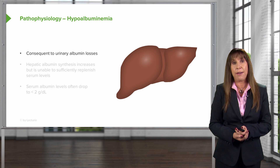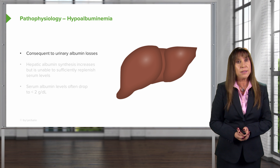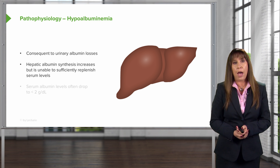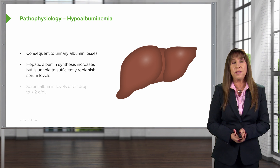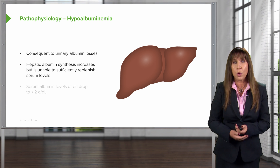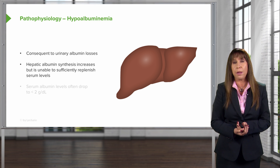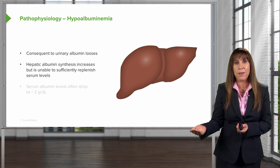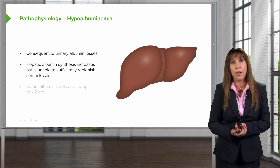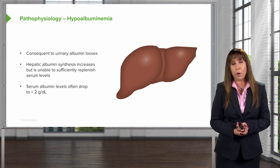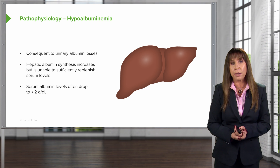Our patients have hypoalbuminemia simply due to the consequent loss of albumin in the urine. The liver tries its best to synthesize as much protein as possible through hepatic albumin synthesis, but it's not able to keep up to replete those serum levels. Sometimes patients can manifest with 45 grams of proteinuria, so you can imagine how hard the liver is working. Often our patients' albumin levels will drop to less than 2 grams per deciliter.